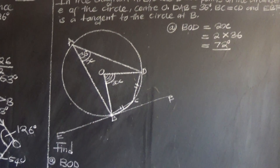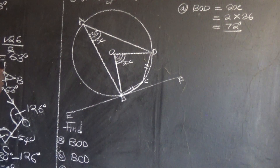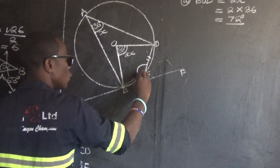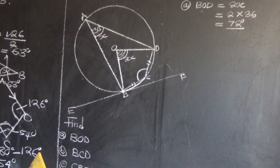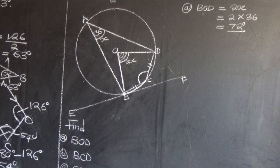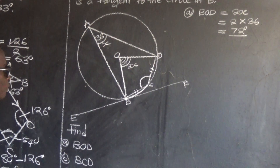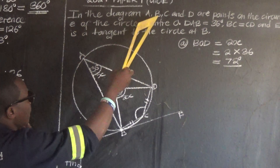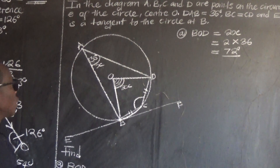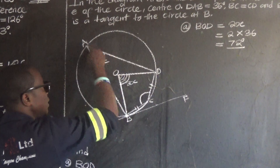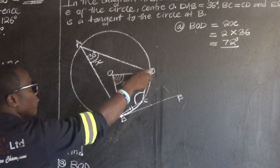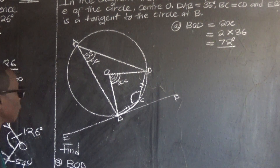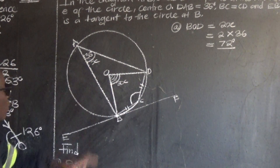Now let us look at question B. Question B is saying: find angle BCD. Now, remember what I said earlier about properties related to the circle. In this case, we have been told that A, B, C, and D are on the circumference of the circle — so A, B, C, and D form what we call a cyclic quadrilateral.